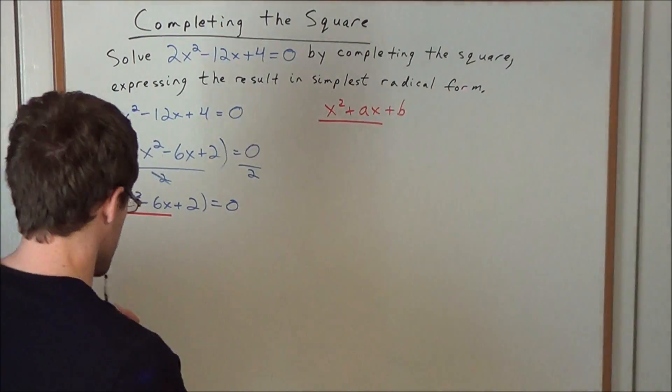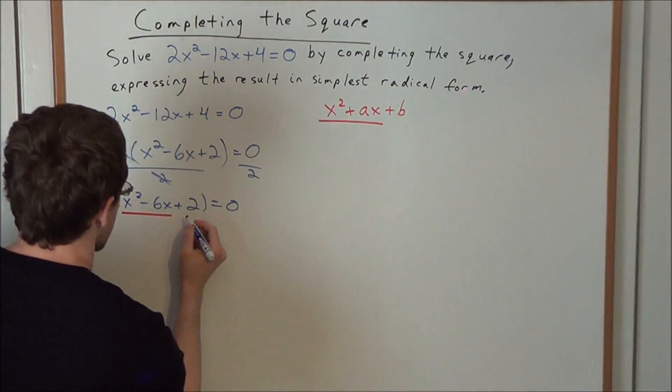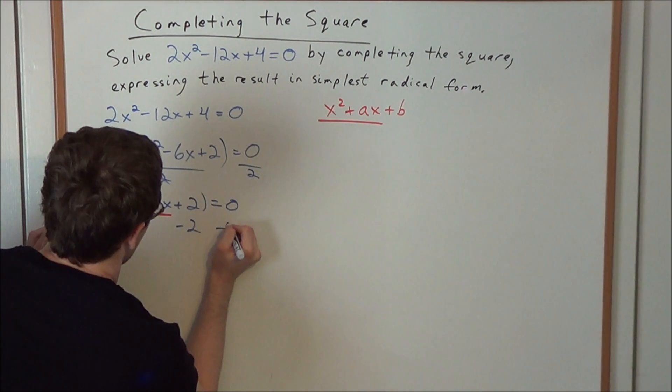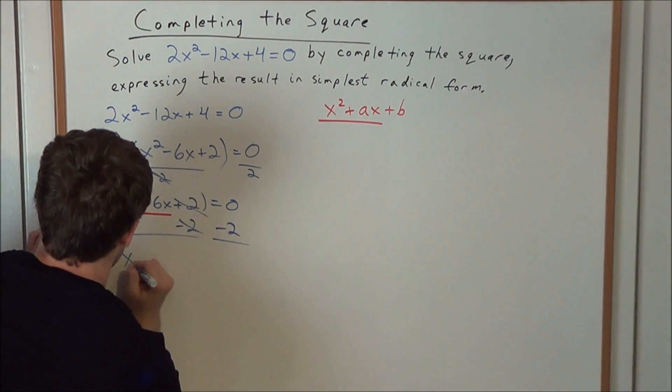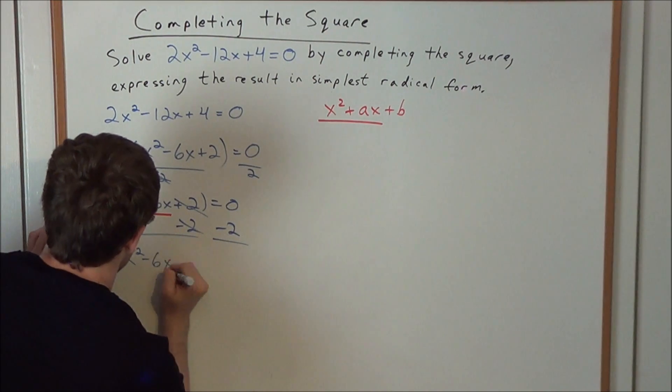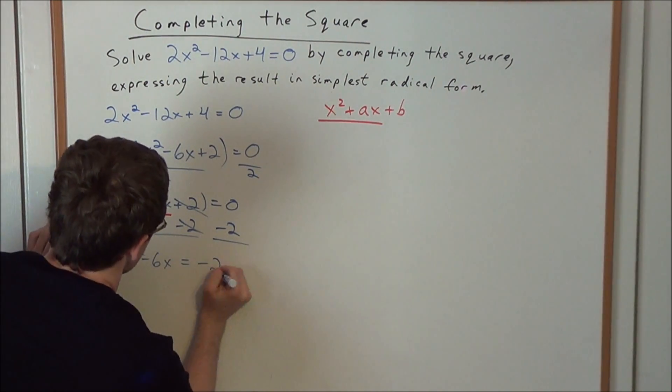So now we go ahead and we isolate this, and we do so by subtracting 2 from both sides. So that gives us that x² - 6x = -2.